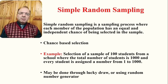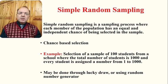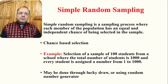An example of simple random sampling is the selection of a sample of 100 students from a school where the total number of students is 1,000. Every student is assigned a number from 1 to 1,000, and then the selection is done randomly through processes such as a draw or using random number generators. Every member of the population has an equal chance of being included in the sample.